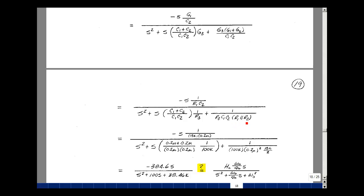And then R1 in parallel with R2 are two 13k resistors in parallel, so their value is half. So multiplying that out, I get a minus 384.6s divided by S squared plus 100s plus 38.46k.